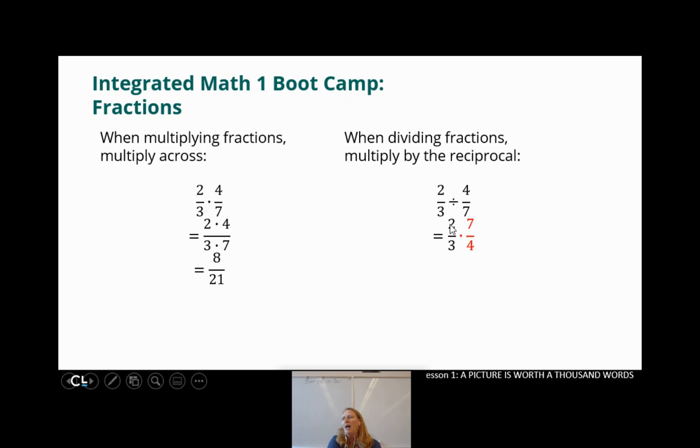And yeah, this is super easy now. Two times seven is 14. Three times four is 12. But I can simplify. Both of those are divisible by two. So I thought to myself, I could rewrite this as seven times two over six times two. And of course, the twos will cancel out. And I just have seven sixths. Yay.